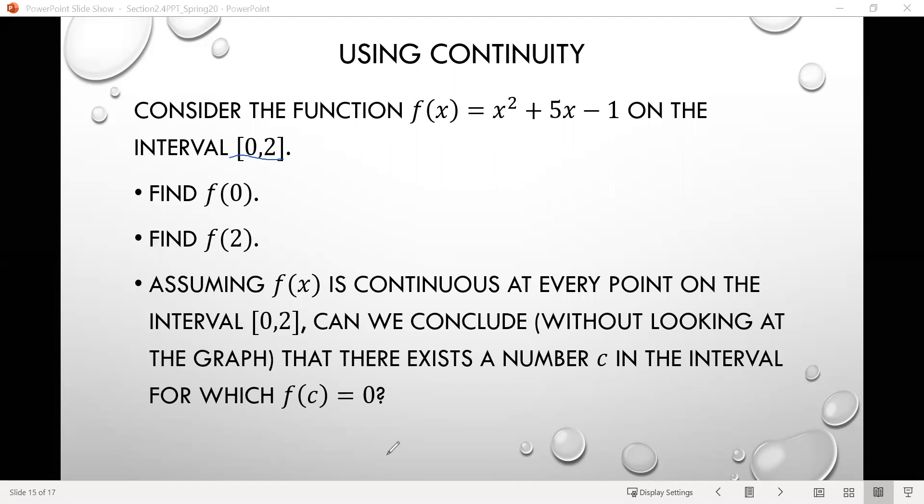So the first thing we're asked to do is find f of 0. So we can just input 0 into the function. So we'll do f of 0 equals 0 squared plus 5 times 0 minus 1 equals negative 1.